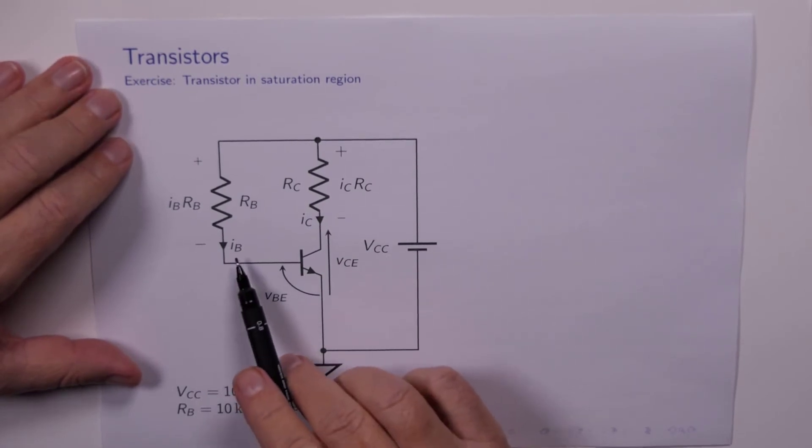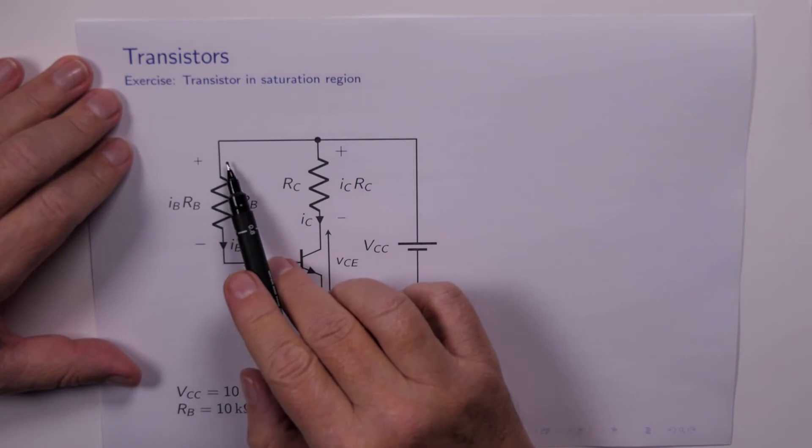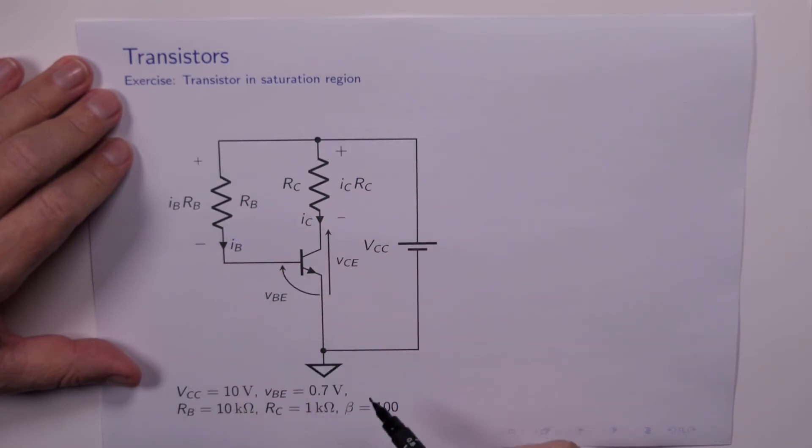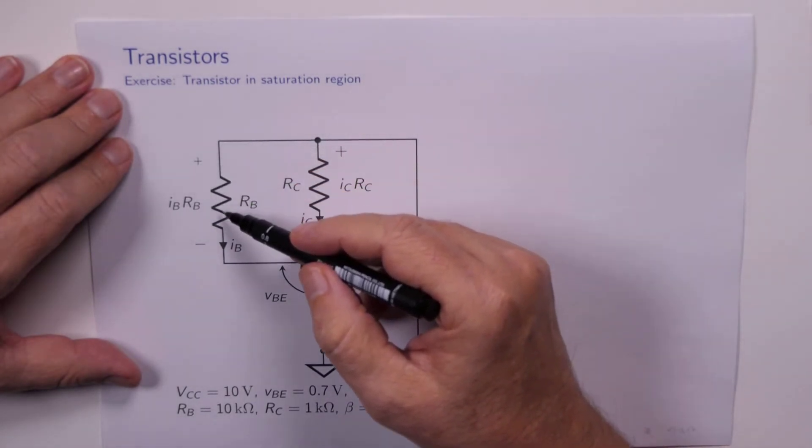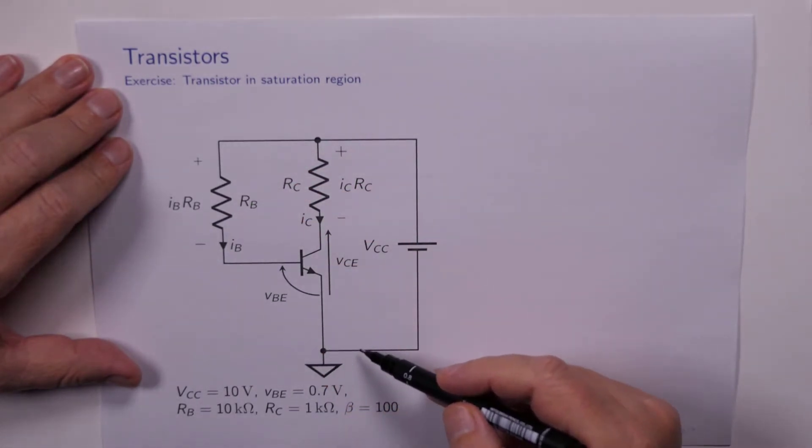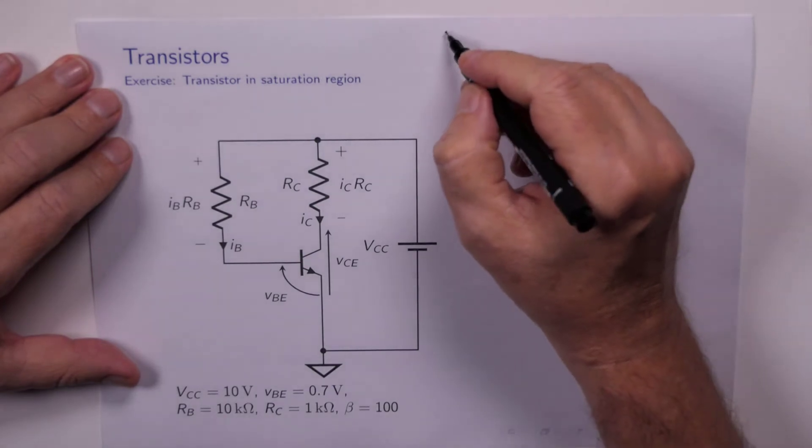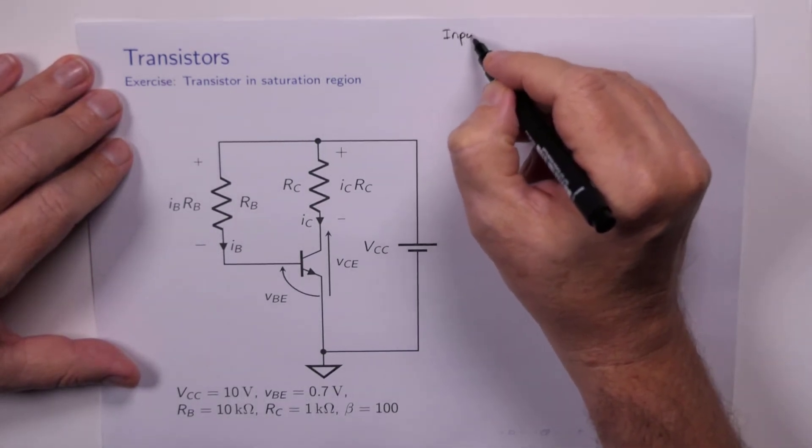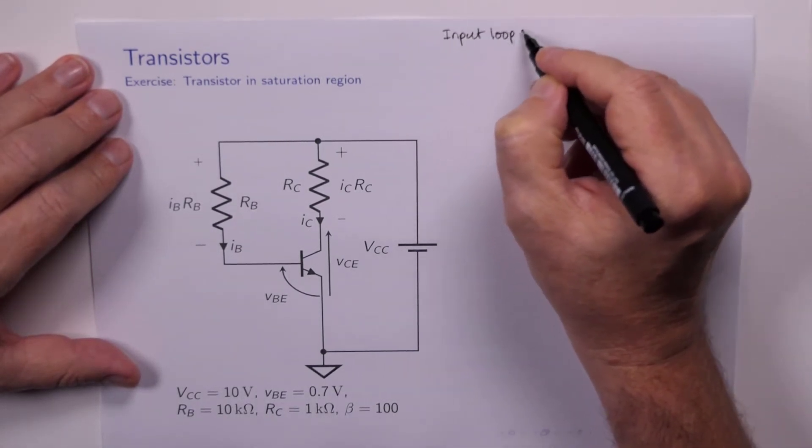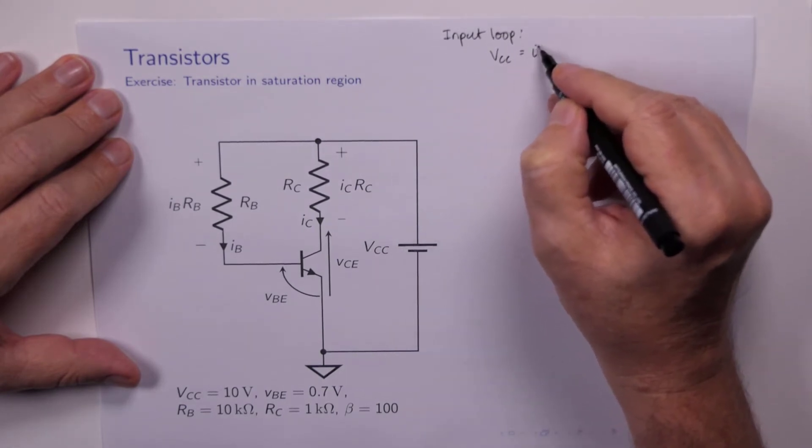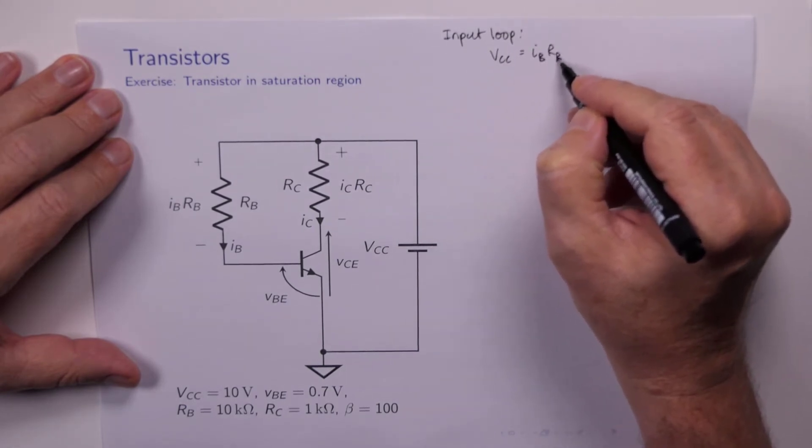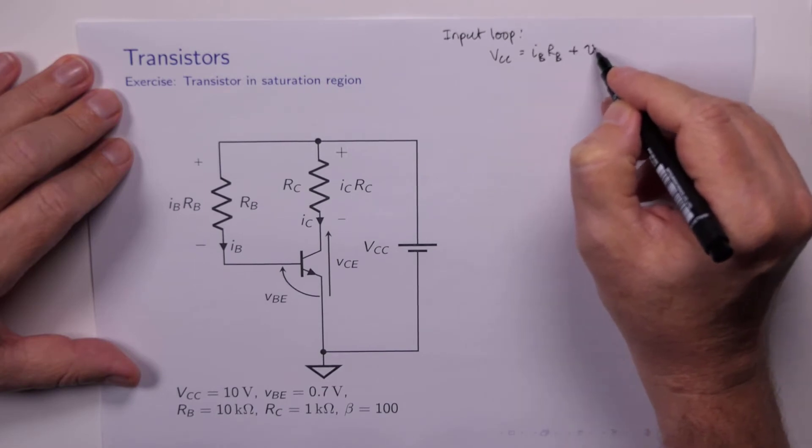We want to calculate the base current first of all. And so we concern ourselves with the input loop. And you can see that we've got a loop around the outside. We've got VCC, RB and VBE. So let's look at the input loop.